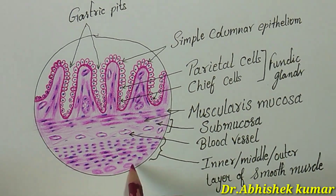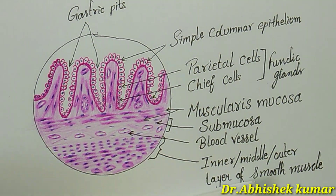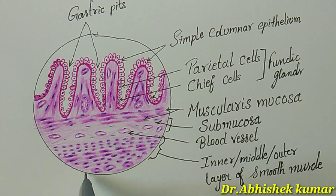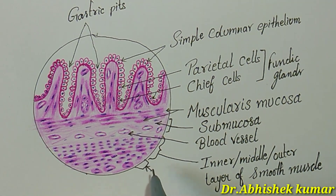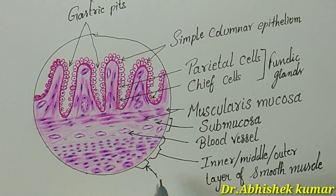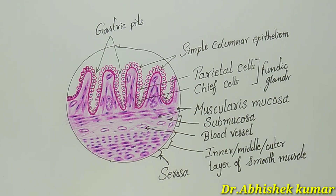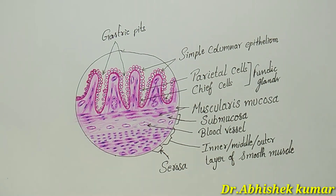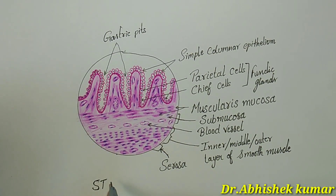The last layer is the serosa. Serosa consists of a thin outer layer of connective tissue that overlies the muscularis externa and is covered by a simple squamous mesothelium of the visceral peritoneum. Serosa can also contain adipose cells.